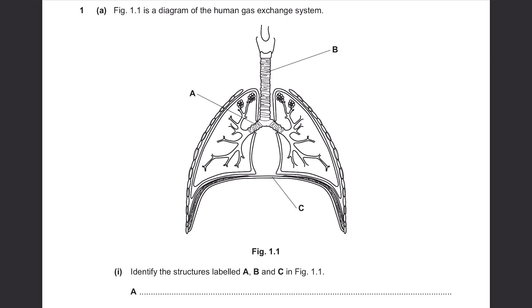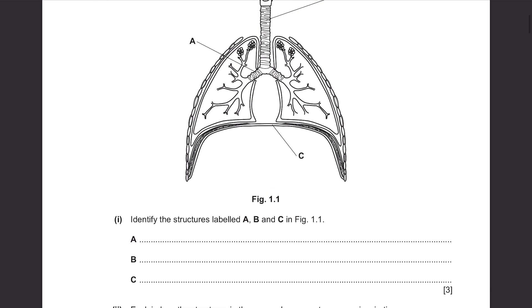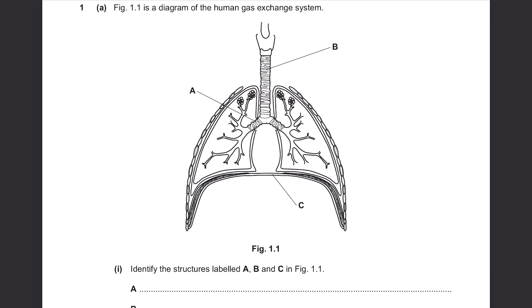Figure 1.1 is a diagram of the human gas exchange system showing the lungs. Identify the structures labeled A, B, and C. A is indicating to this part of the diagram — it allows the transport of air to each of the lungs, and it's called the bronchus. Then B is indicating to this passageway — this is the trachea. And C is indicating to this area — it's called the diaphragm.